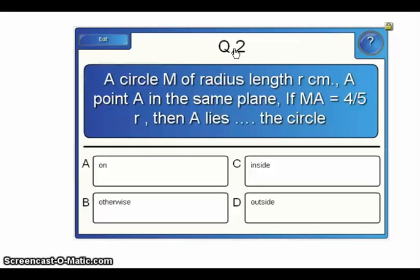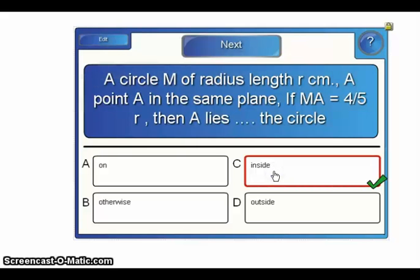In this exercise, we have a circle M of radius length R, and a point A in the plane such that the distance between point A and the center equals 4/5 of the radius of the circle. Since 4/5 R is less than the radius, point A lies inside the circle.